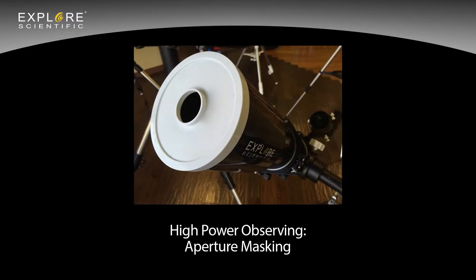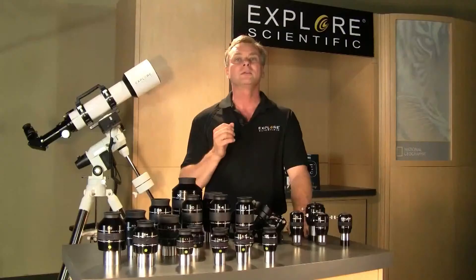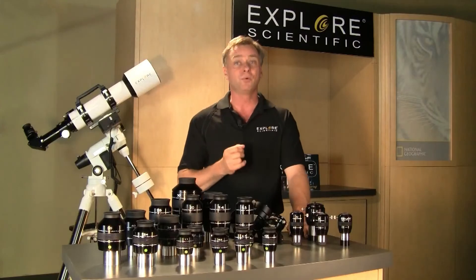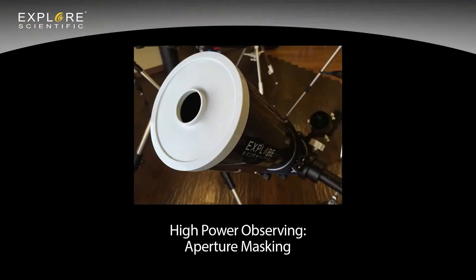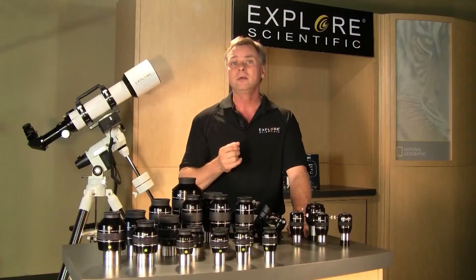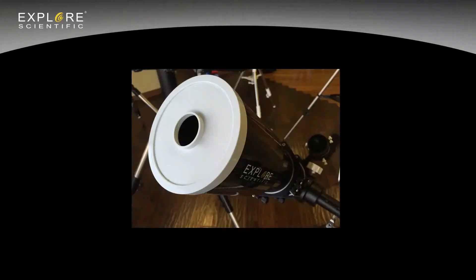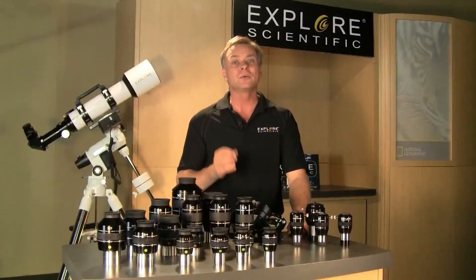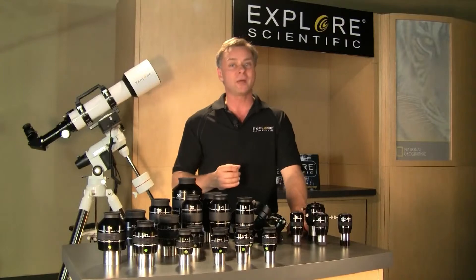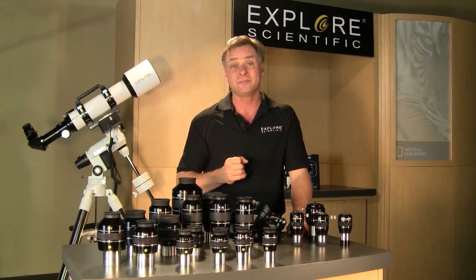What's aperture masking and how can it improve your high power observing? During times of poor to bad seeing, images of the moon, planets, and double stars observed at higher power can be improved by reducing the entrance aperture of your telescope. Masks can be made from various sizes of cardboard. With less aperture, there is less resolving power, but images will look sharper.